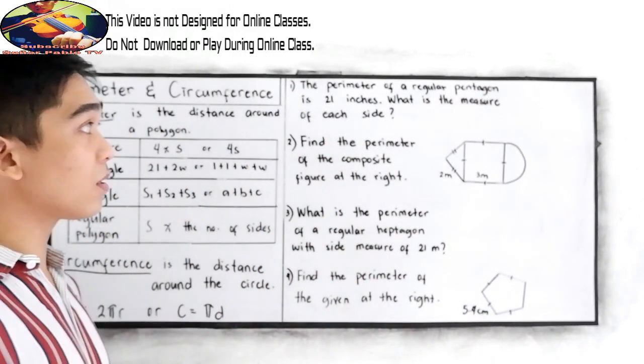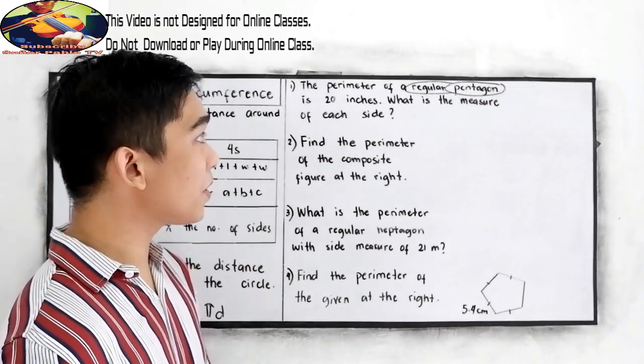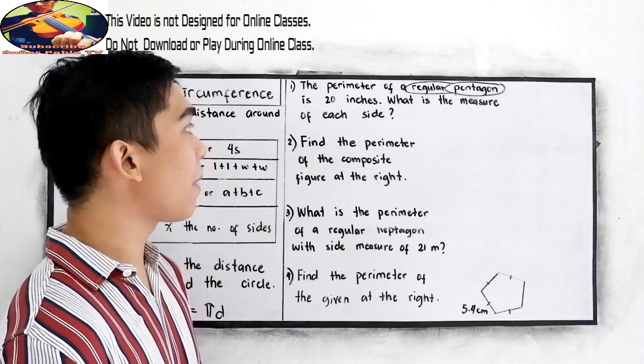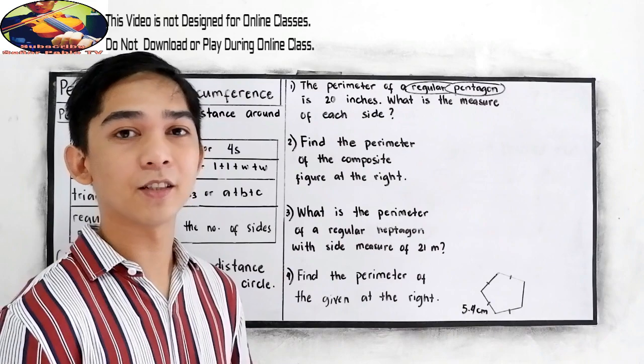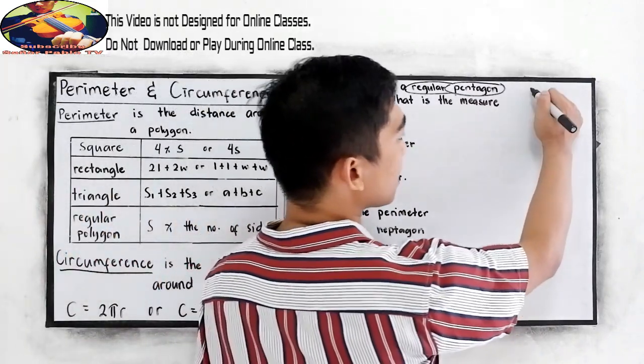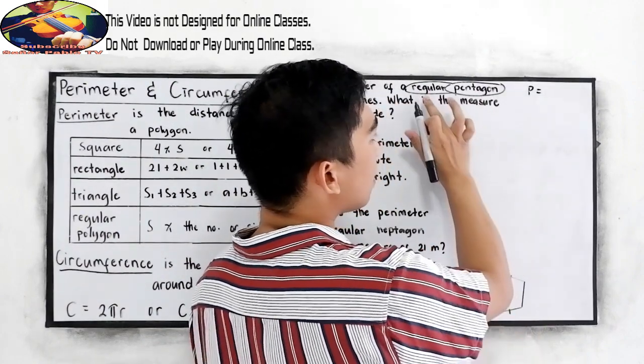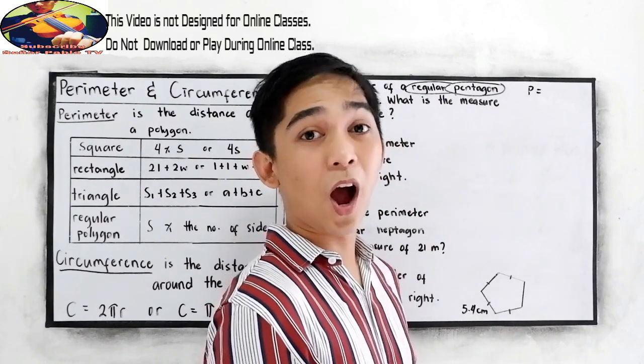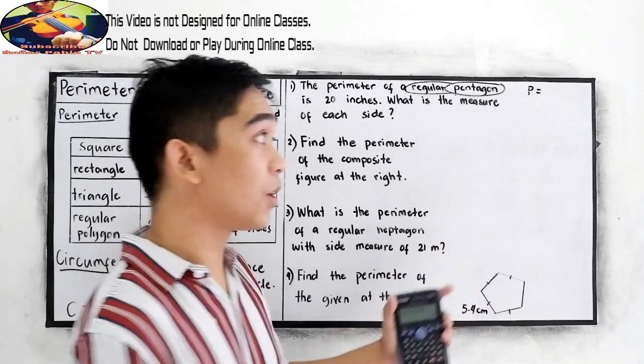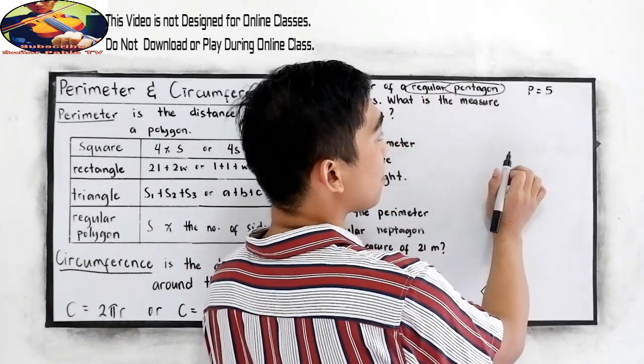Now to better understand, let's have these examples. Number one: the perimeter of a regular pentagon is 20 inches. What is the measure of each side? So given our perimeter is equal to 5s for a regular pentagon. So how many sides do we have in regular pentagon? There are 5 sides in a regular pentagon.